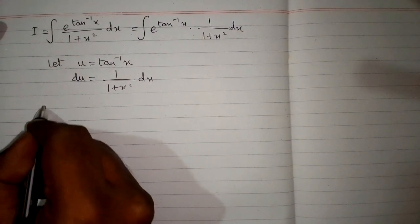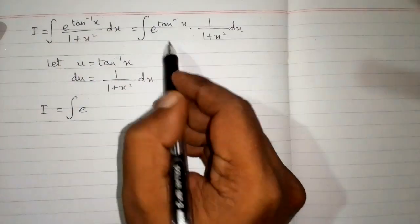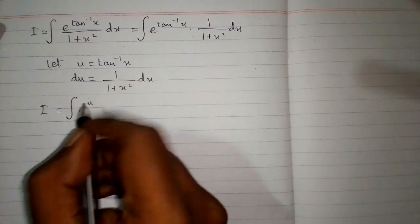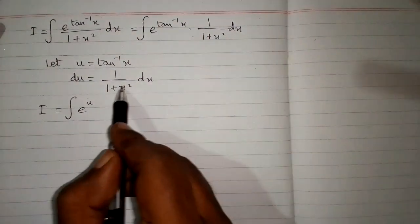The integral I becomes e to the power u, where we put u in place of tan inverse x and du in place of 1 upon 1 plus x square dx.